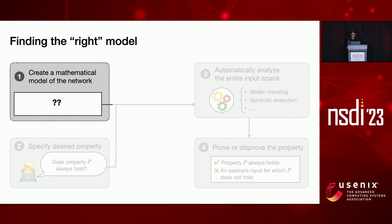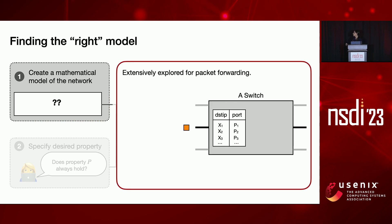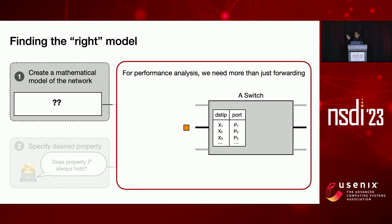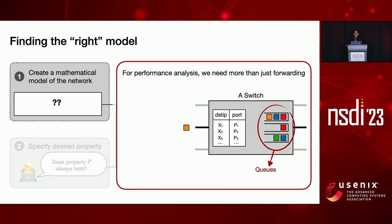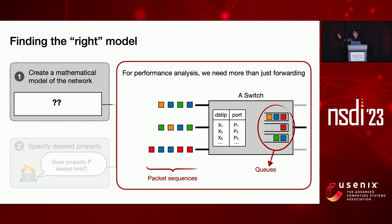The first implication is the model. Using a simple example: let's say we have a switch. If you were only interested in its functionality, you could just look at how it decides to forward a packet to a port — a well-studied problem. But for performance, it matters how long the packet spends in the switch. We have to model the queues, because packets may wait before being sent out. Packet interactions matter, so we can't look at individual packets anymore; we must reason about packet sequences competing for resources.